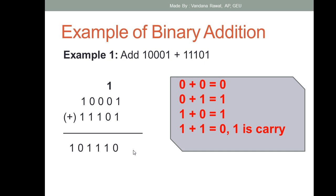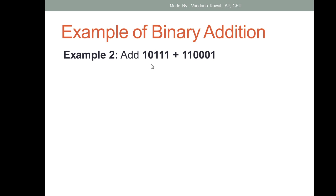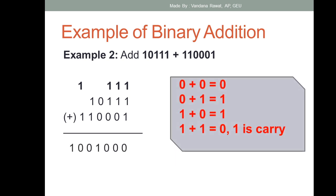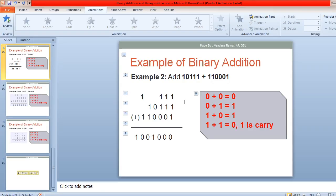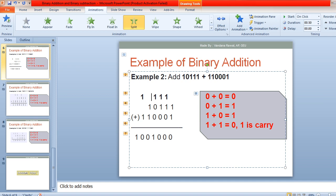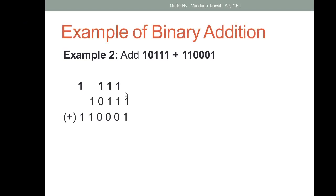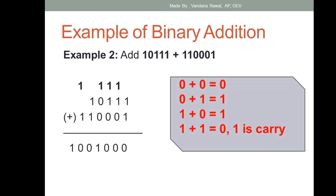Now take example number two to perform binary addition. The first number is 10111 and the second number is 11001. This is your first number and this is your second number and you have to add them. Using the four rules of binary addition: first, one plus one equals zero with one in the carry part, written to the left.